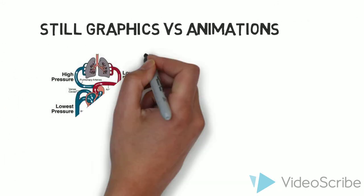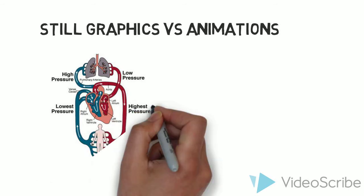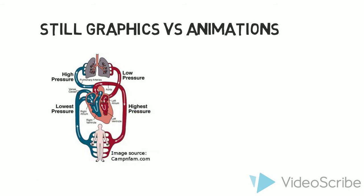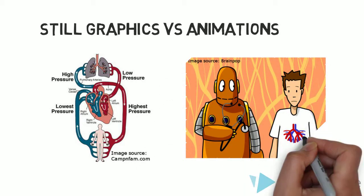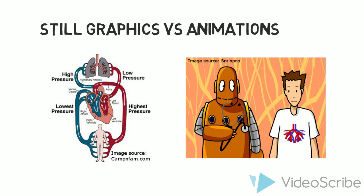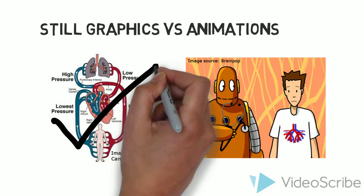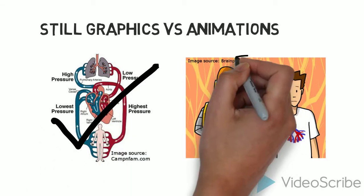Researchers have found students learn better with a series of still frames than an animation. One reason is because animations often involve much more information than still images, and learners can be overwhelmed by this extra information. We also have a tendency to fall into couch potato mode when viewing animations or video, while we often have to invest mental effort into deciphering still images. That extra effort results in increased learning.